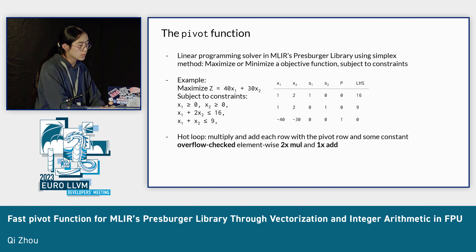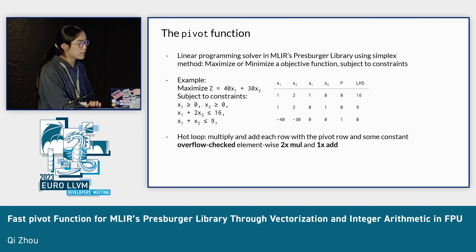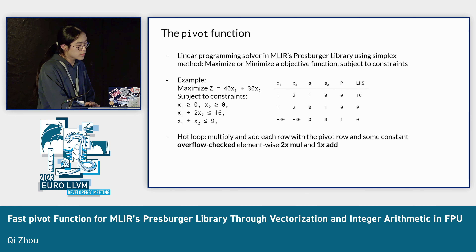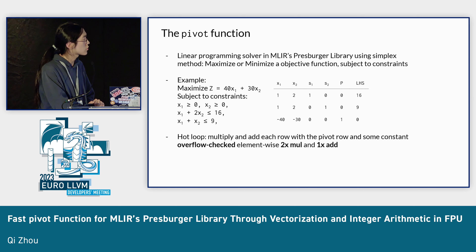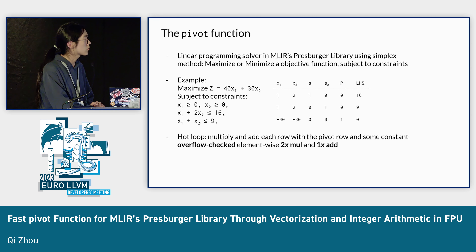Going back to the pivot function, its purpose is to solve linear programming problems using the simplex method. Linear programming is a mathematical optimization technique used to model and find the best possible solution using a set of constraints and objective functions to maximize or minimize. For example, we want to maximize z = 40x1 + 30x2, subject to x1 > 0, x2 > 0, x1 + 2x2 ≤ 16, and x1 + x2 ≤ 9.